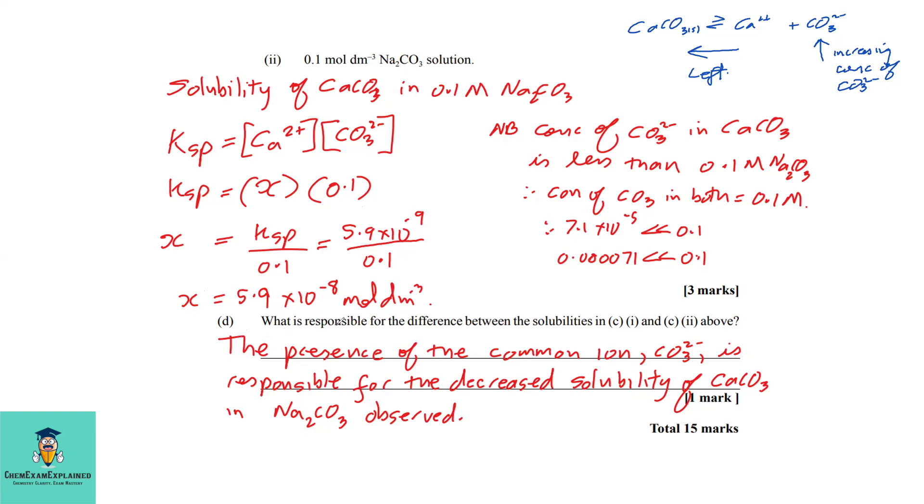Question 2d: What is responsible for the difference between the solubilities in c1 and c2 above? We discussed this earlier: the presence of the common ion, which is the carbonate ion, is responsible for the decreased solubility of calcium carbonate in sodium carbonate observed.